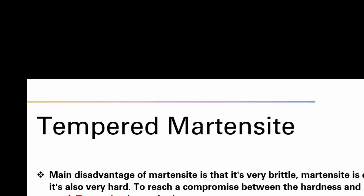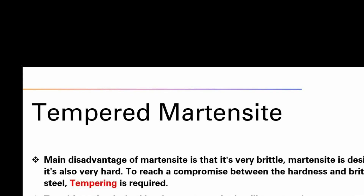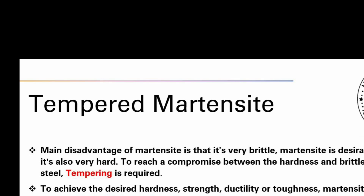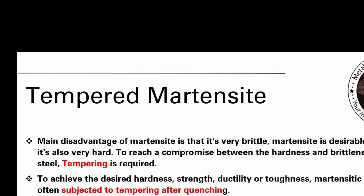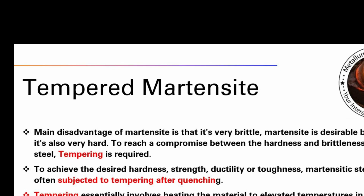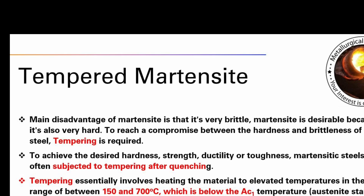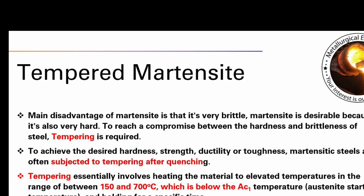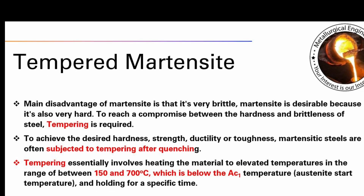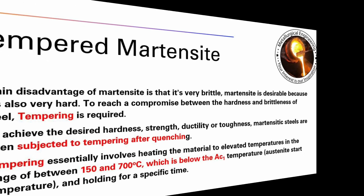The main disadvantage of Martensite is that it is very brittle. Martensite is also desirable because it is very hard. To reach a compromise between the hardness and brittleness of steel, tempering is required. To achieve the desired hardness, strength, ductility or toughness, Martensitic steels are often subjected to tempering after quenching.